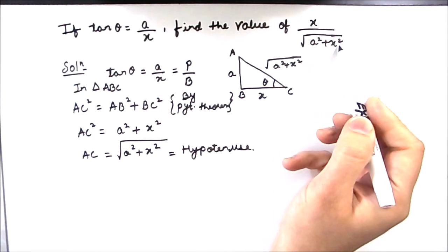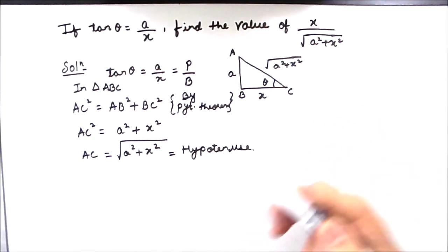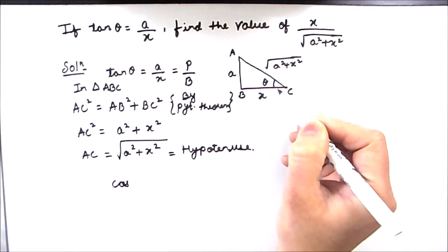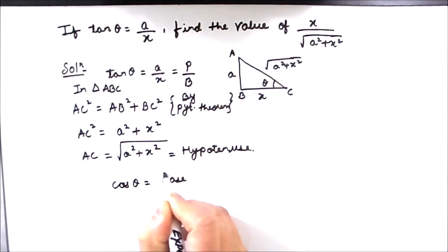So we need to find the value of x divided by square root of a square plus x square. We have to take AC and BC into consideration. By using these two sides we can write the value of cos theta as base divided by hypotenuse.